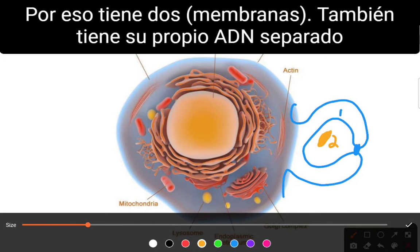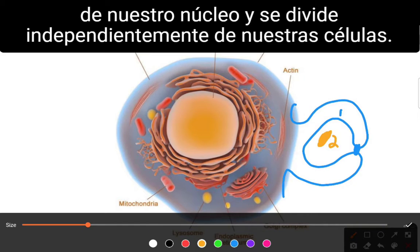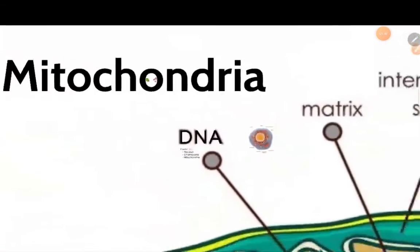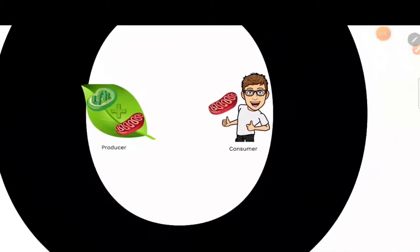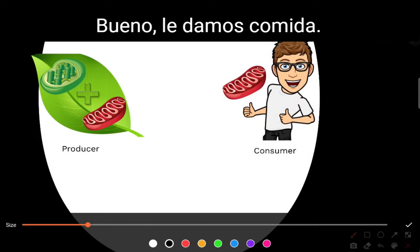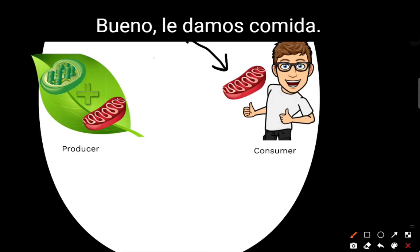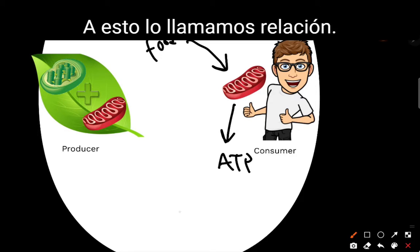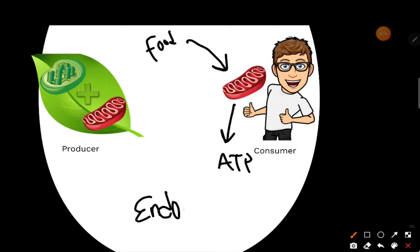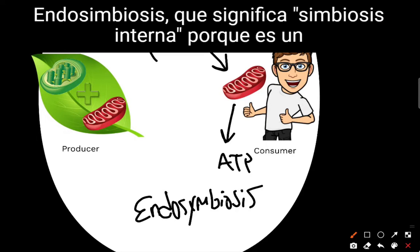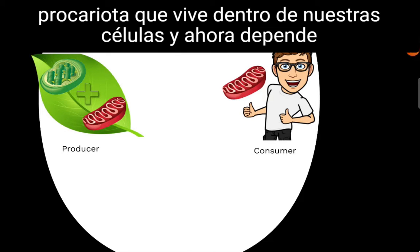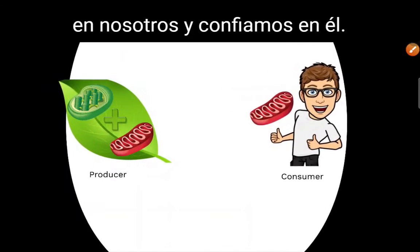It also has its own DNA, separate from our nucleus, and it divides independently of our cells. Typically, athletes will have more of it. We call this relationship endosymbiosis — endo means inside — because it is a prokaryote that lives inside of our cells. It now relies on us, and we rely on it.